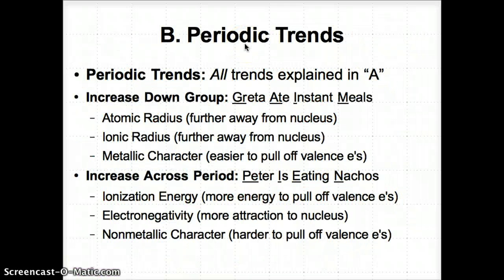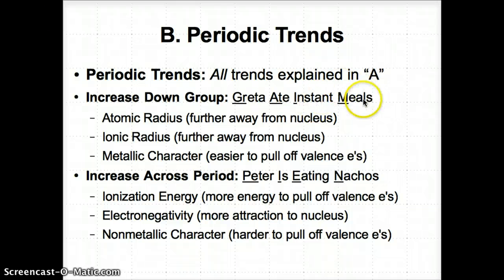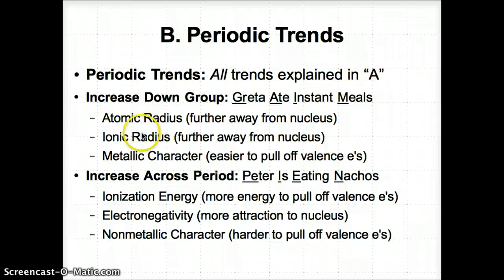Let's talk about periodic trends very specifically now. To remember which periodic properties increase down a group and across a period, we need to remember two phrases. For properties increasing down a group, just remember 'Greta ate instant meals.' GR in Greta stands for group. AT in ate stands for atomic radius. I in instant stands for ionic radius. And M in meals stands for metallic character. Atomic and ionic radii both increase going down a group because electrons get further and further away from the nucleus as you add more energy levels.